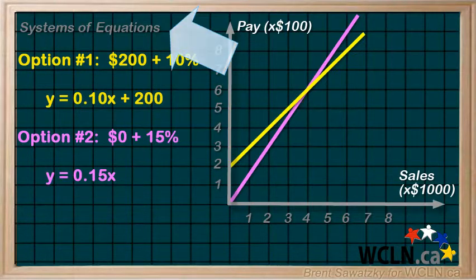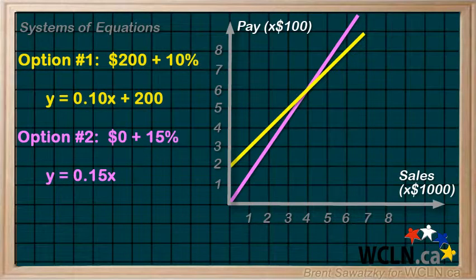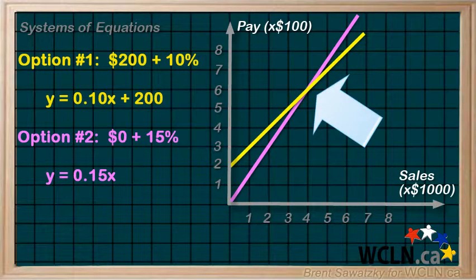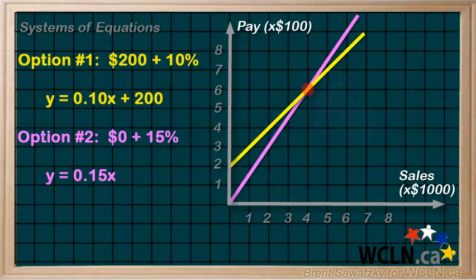One feature of this system of equations that would be of particular interest in this problem, is the point right here. This is the solution of the system of equations, that is, the point where both lines intersect. In our case, this point, or solution, represents where we would make the same amount despite the option we chose.